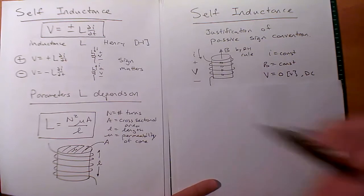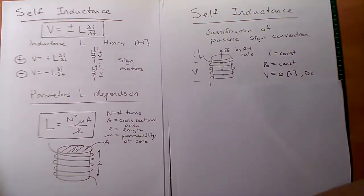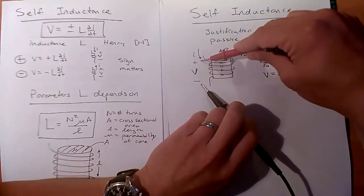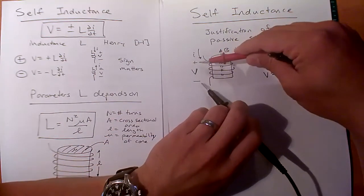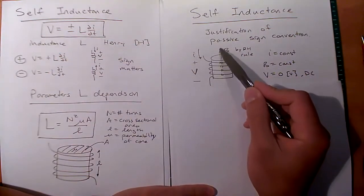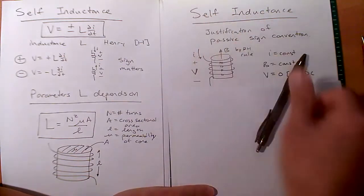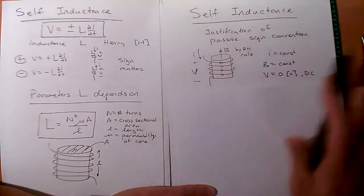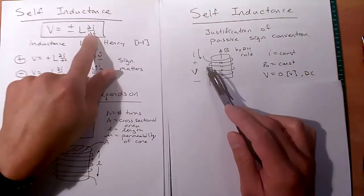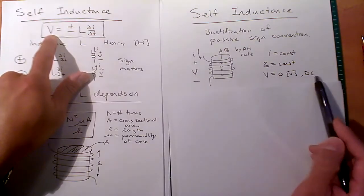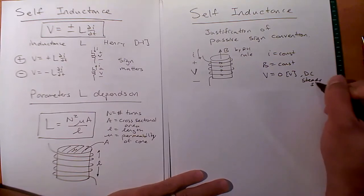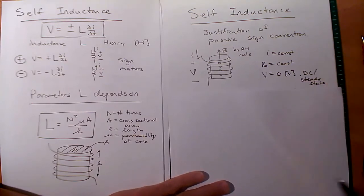This current coming in — if positive — creates a flux density going up by Ampere's law and the right-hand rule. Now let's assume everything's in steady state, constant. We know from an inductor that if dI/dt is zero, then V is zero. Now let's say we start increasing the current — dI/dt is positive, like attached to some source ramping up.